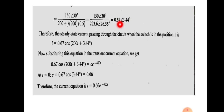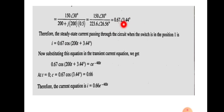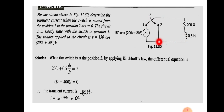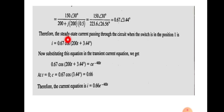The current 0.67∠3.44° in polar form can be written in sinusoidal form as i = 0.67 cos(200t + 3.44°). This is the steady-state current because before t equal to 0, the current flowed through the circuit and attained a constant value. The steady-state current when the switch is in position 1 is 0.67 cos(200t + 3.44°).